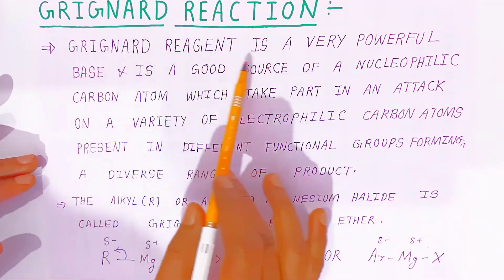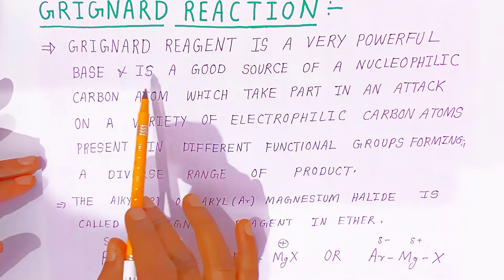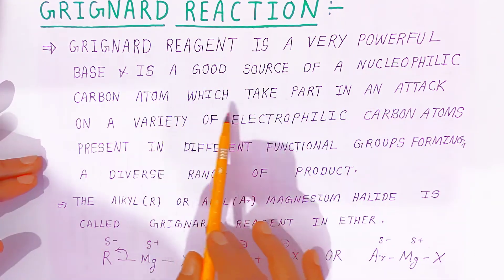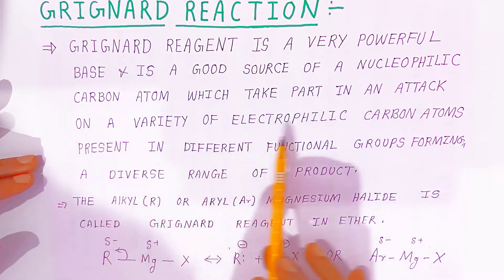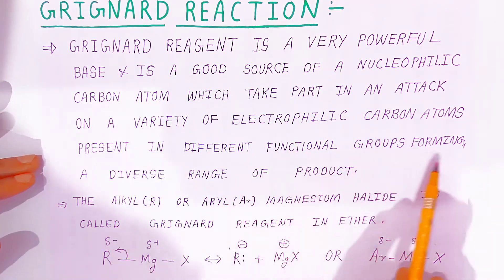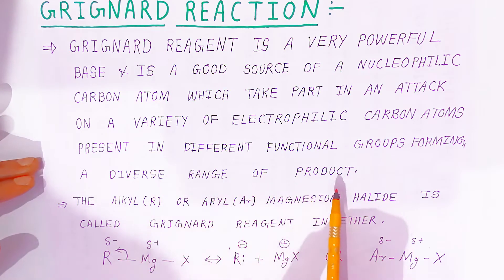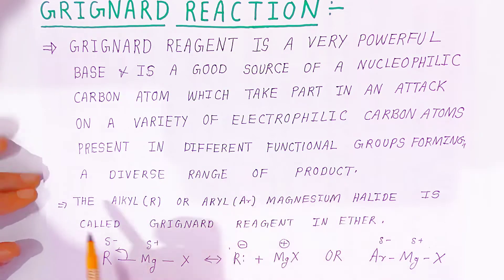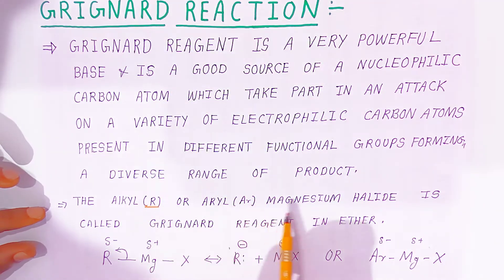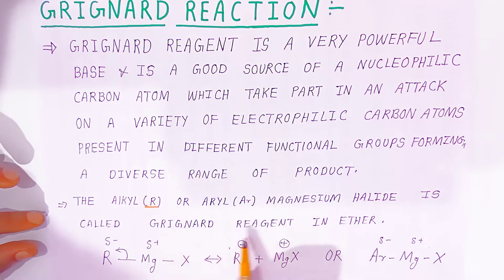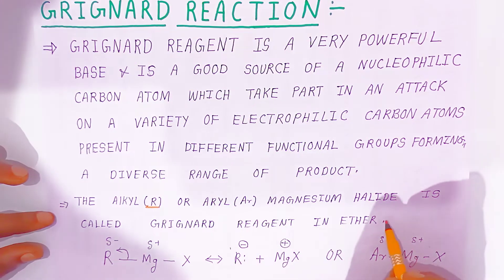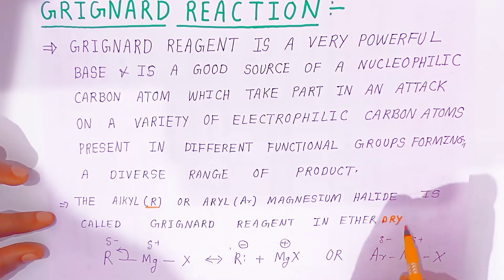Grignard reagent is a very powerful base. It is a good source of nucleophilic carbon atom which takes part in attack on a variety of electrophilic carbon atoms present in different functional groups, forming a diverse range of products. Alkyl (R) or aryl (Ar) magnesium halide is called Grignard reagent, prepared in presence of dry ether.